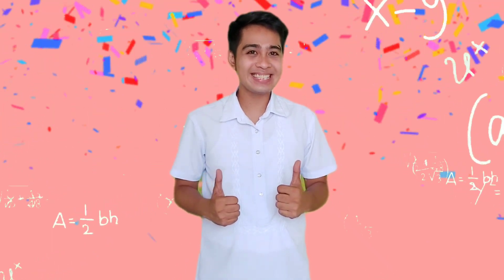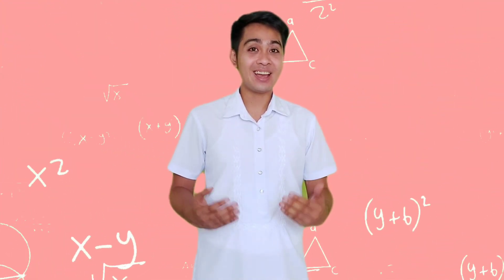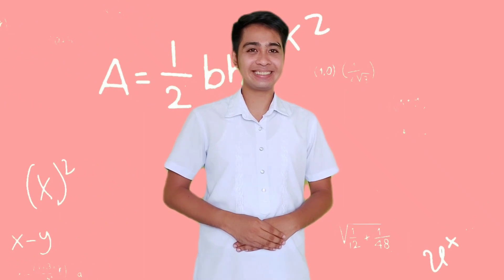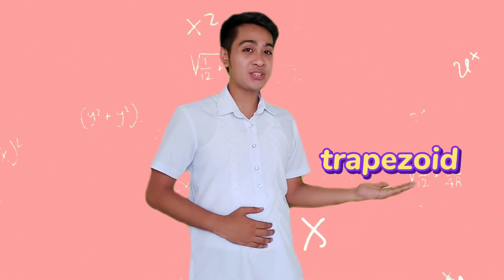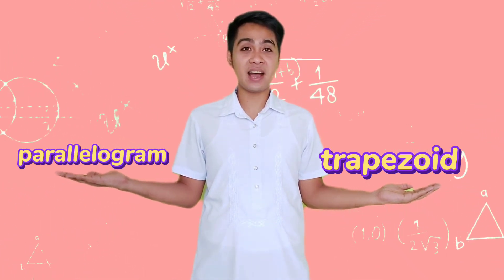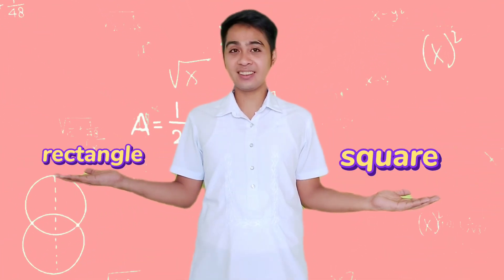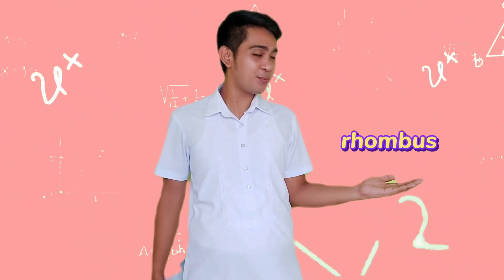Good job, kids! Again, what are different kinds of quadrilaterals? Very good! A trapezoid, a parallelogram, a square, a rectangle, and a rhombus.